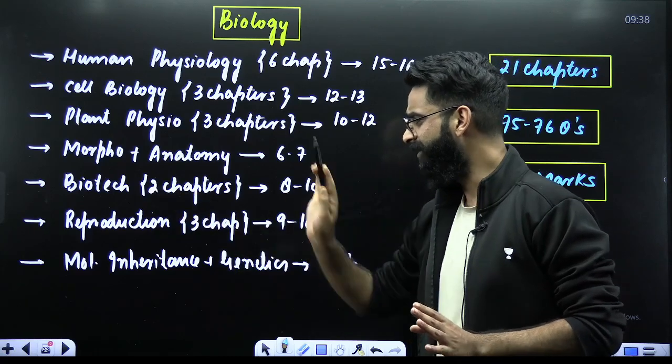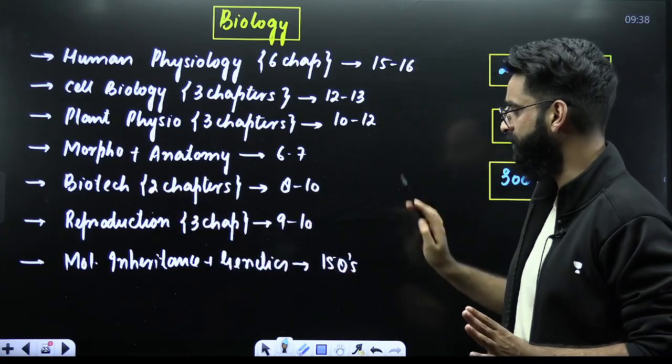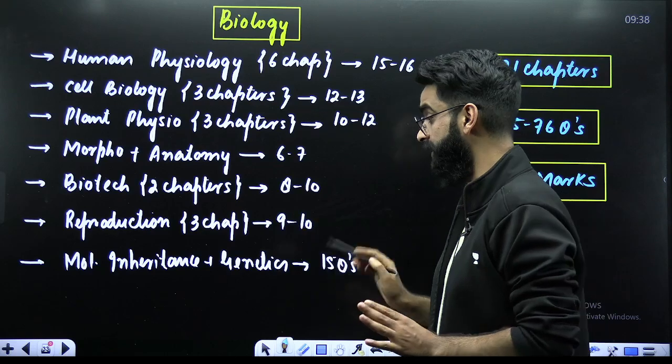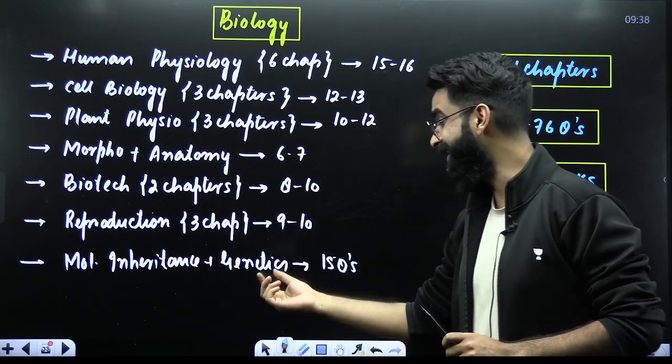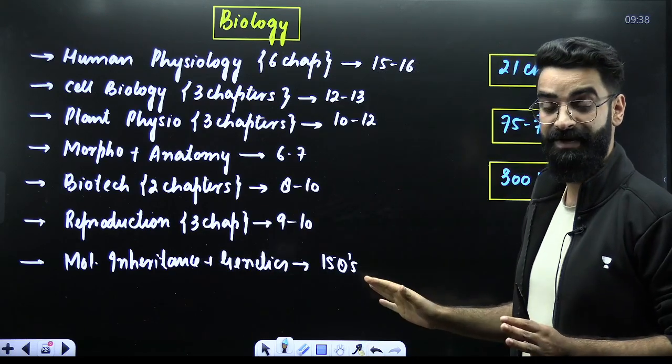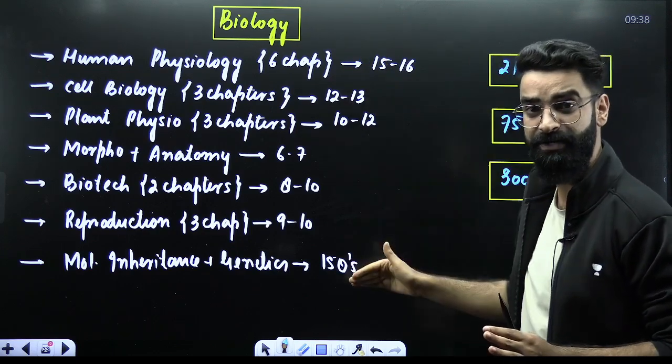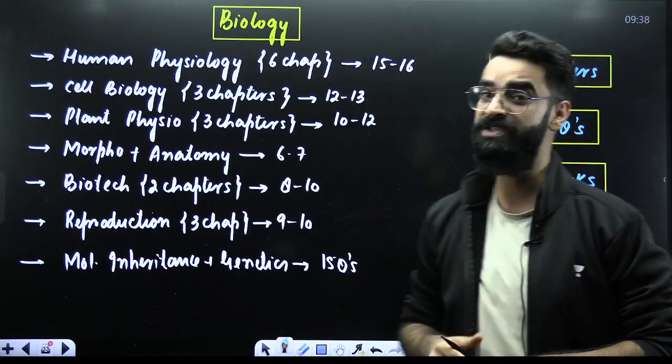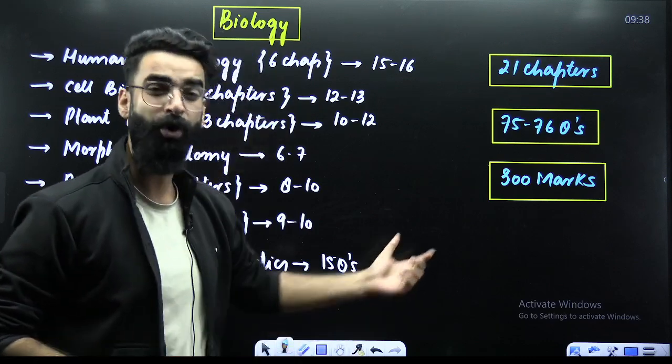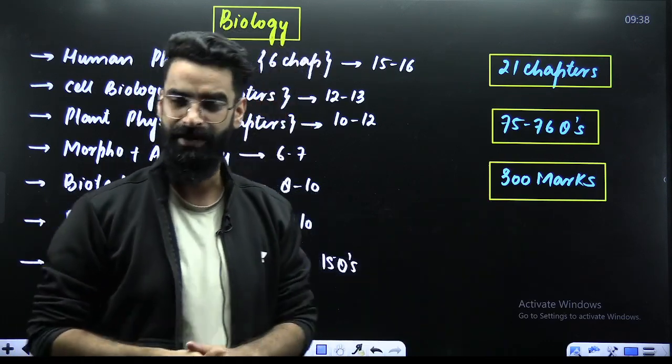Morphology and Anatomy, 6 to 7 questions. Biotech, which consists of 2 chapters, 8 to 10 questions. Reproduction, 3 chapters, 9 to 10 questions. Molecular Inheritance and Genetics, 15 questions. Look at these particular units. These are the units which are going to fetch you more than 300 marks when it comes to the subject Biology.